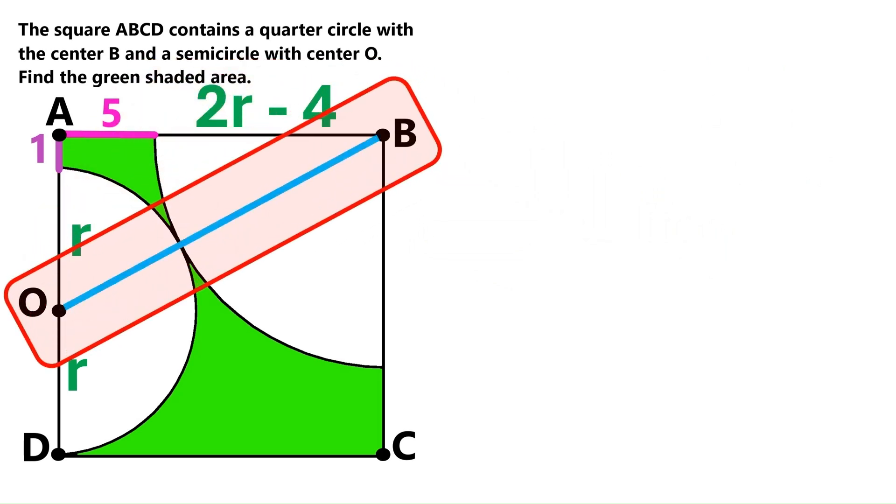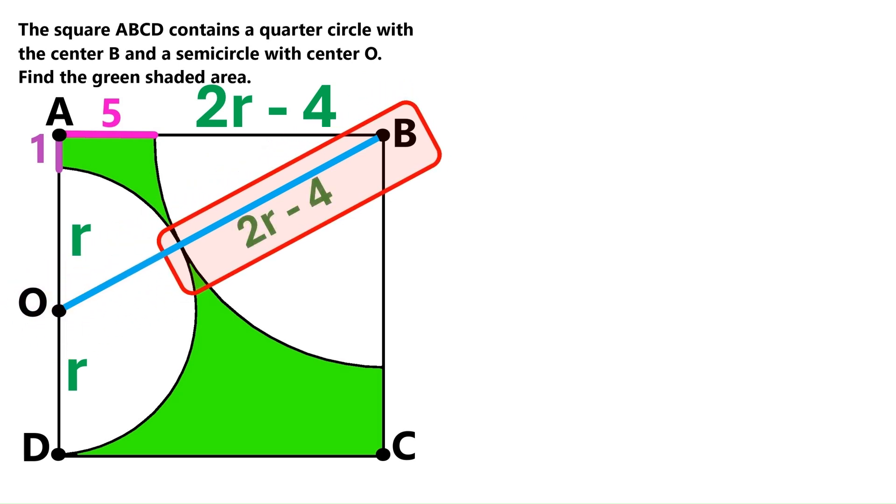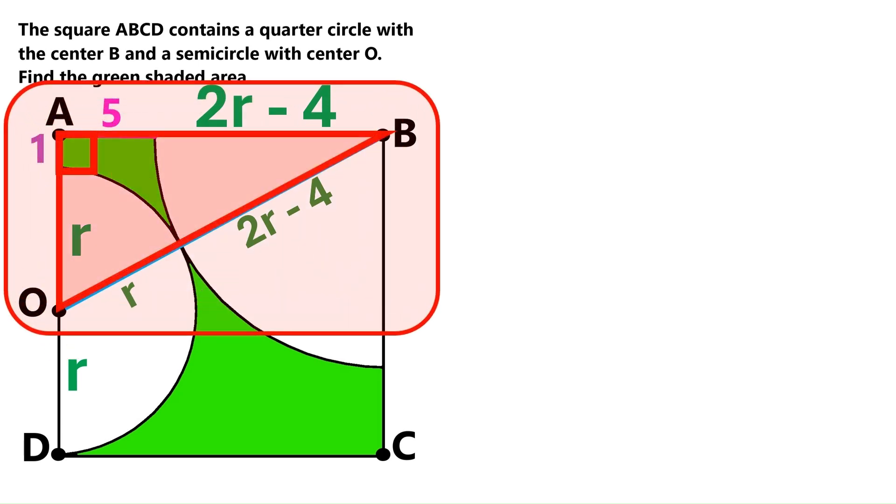Now, let's draw this straight line that goes from the center of the quarter circle to the center of the semicircle. This part of the line is the radius of the quarter circle, so it equals 2r minus 4. And this part is the radius of the semicircle, so it's just r. This angle is 90 degrees, because it's in the corner of the square. We've got a right triangle here.